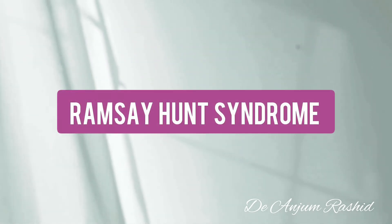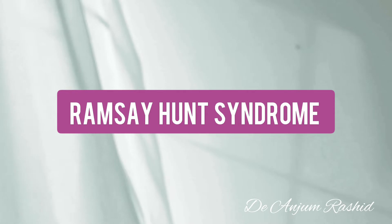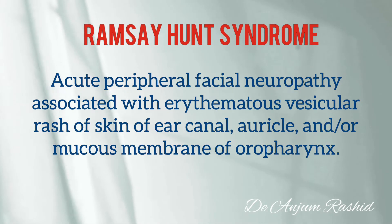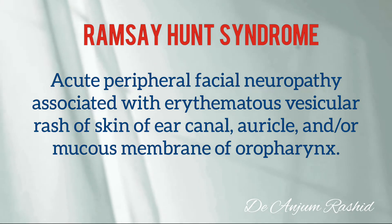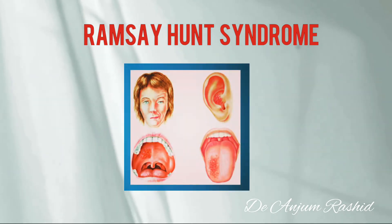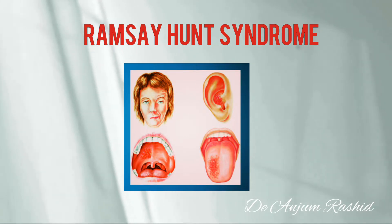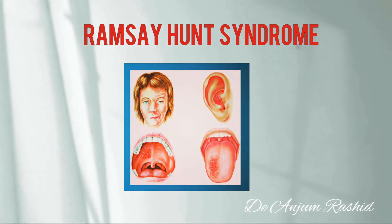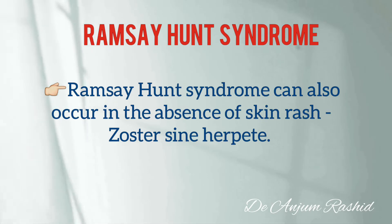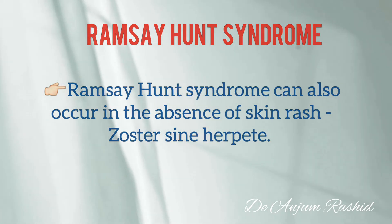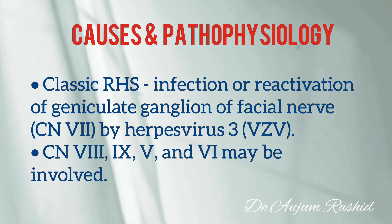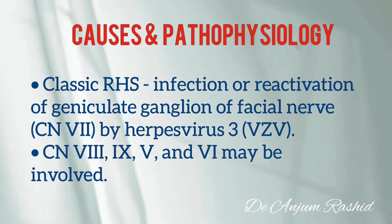Hello everyone, welcome to my YouTube channel. Today I will discuss Ramsay Hunt Syndrome. Ramsay Hunt Syndrome is defined as an acute peripheral facial neuropathy associated with erythematous vesicular rash of the skin of the ear canal, auricle, and/or mucous membrane of the oropharynx. It can also occur in the absence of a skin rash, and this condition is known as zoster sine herpete.